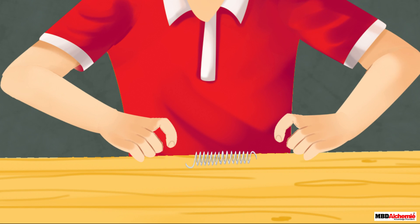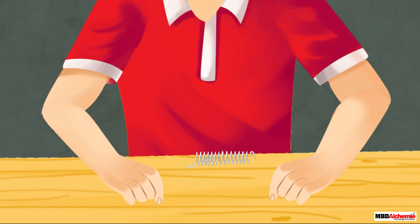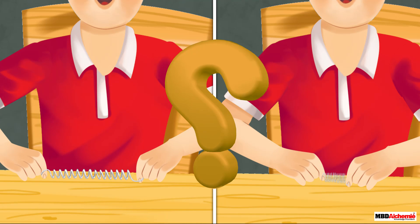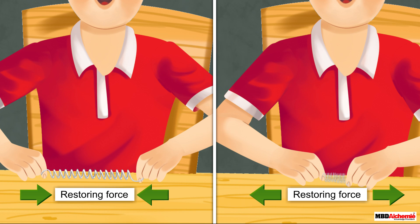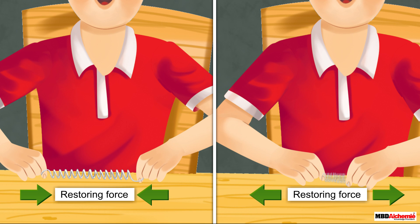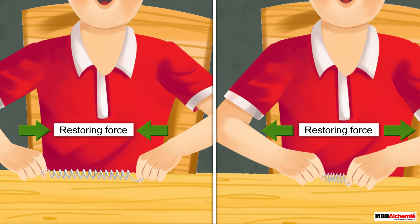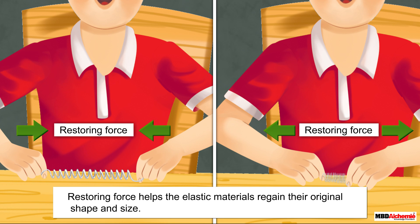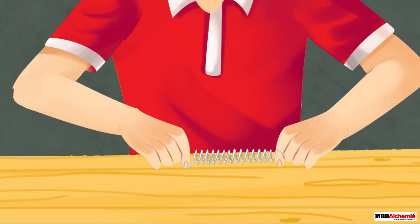Similarly, when we compress a spring and then release it, the spring regains its original shape and size. A characteristic property of elastic materials is acting, which is known as the restoring force. It is this force that helps elastic materials to regain their original shape and size.